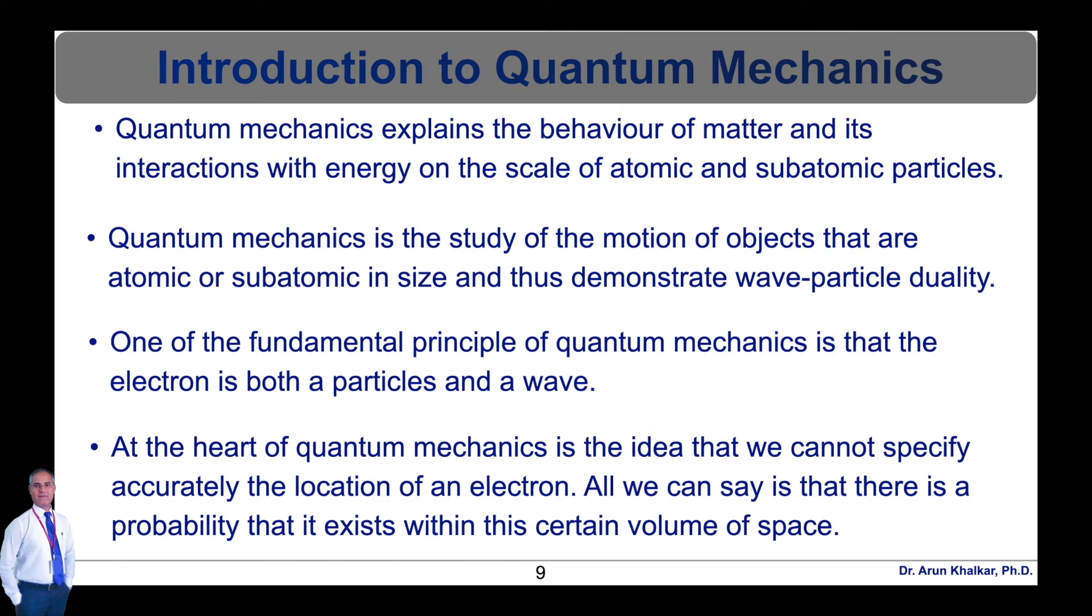The heart of quantum mechanics is the idea that we cannot specify accurately the location of an electron. All we can say is that there is a probability that it exists within a certain volume of space. The scientist Erwin Schrodinger developed an equation that deals with these calculations. Such equations are very important in quantum mechanics.